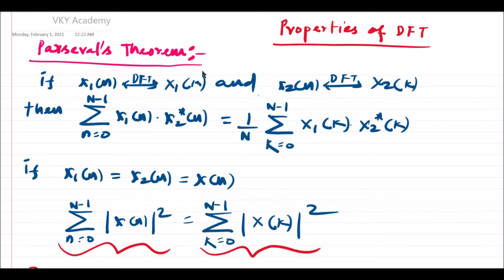In this video lecture we will be discussing one more very important topic of discrete Fourier transform, that is Parseval's theorem. Basically, if x1(n) and x2(n) are two arbitrary discrete time sequences, then Parseval's theorem states that if DFT of x1(n) is X1(k) and DFT of x2(n) is X2(k), then summation n=0 to N-1 of x1(n) · x2*(n) equals 1/N summation k=0 to N-1 of X1(k) · X2*(k).